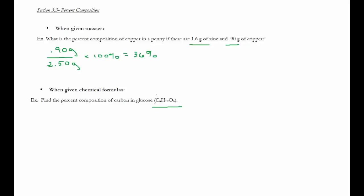So, if I take carbon, and the molar mass of carbon is 12.01, and I multiply that by 6, because I've got 6 carbons, the molar mass I get for carbon is 72.06 grams per mole. Then I'm going to divide that by the total molar mass of glucose.